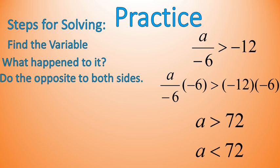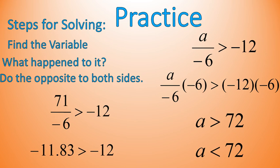Let's check that work. I'm going to pick a number really close to 72 — I'm going to pick the number 71. Notice I'm not caring so much about it being easily divisible by 6; I'm just going to go ahead and try it out. So 71 divided by negative 6 gives me negative 11.83. And because I substituted it into the original inequality, it is greater than negative 12 — and that's correct. Negative 11.83 is greater than negative 12, so I've solved it and I know that that is correct.